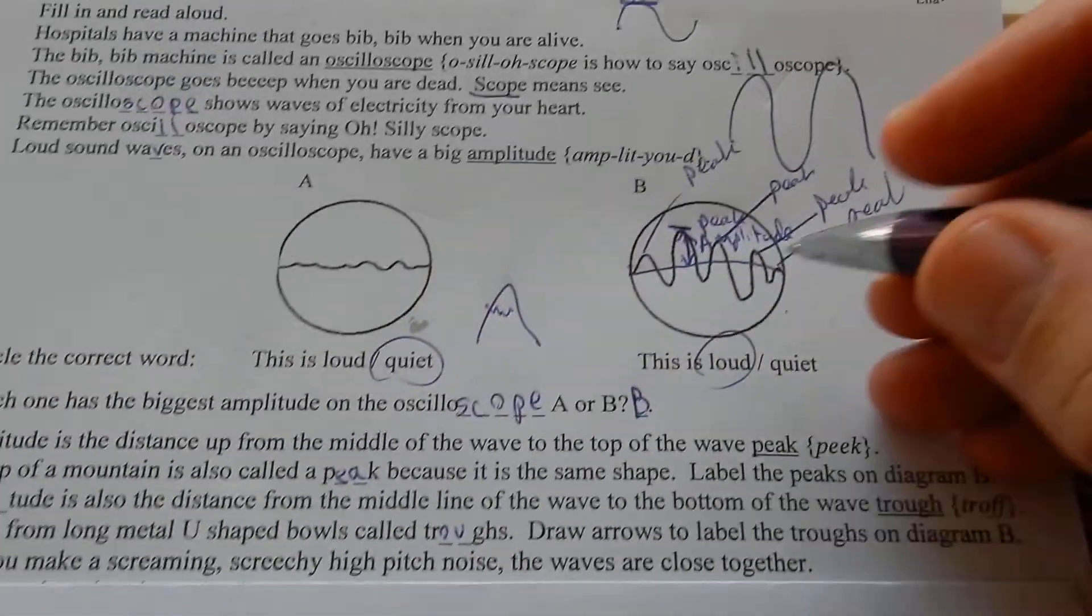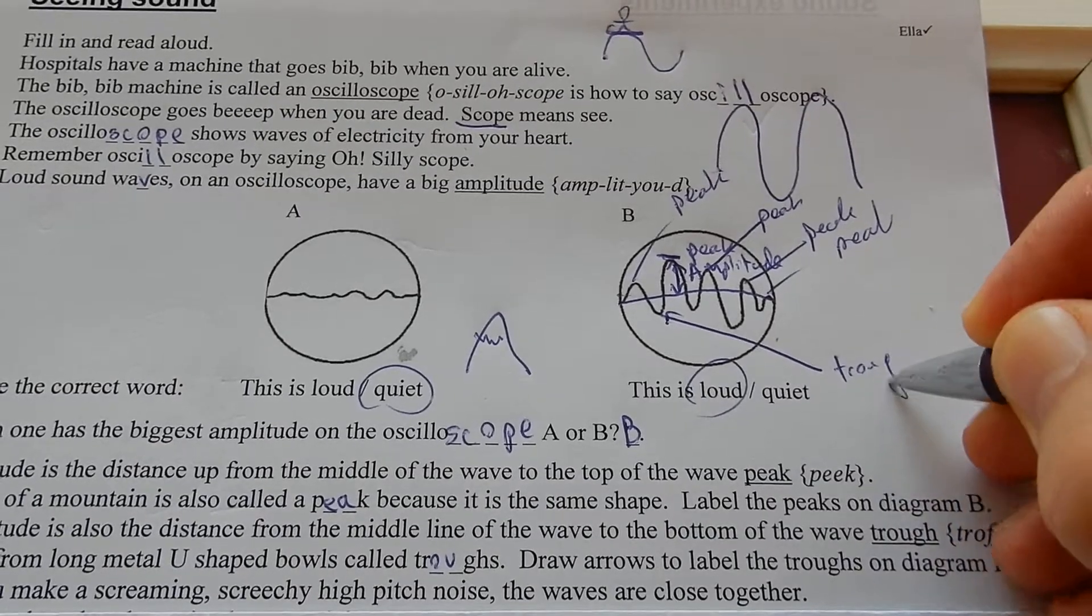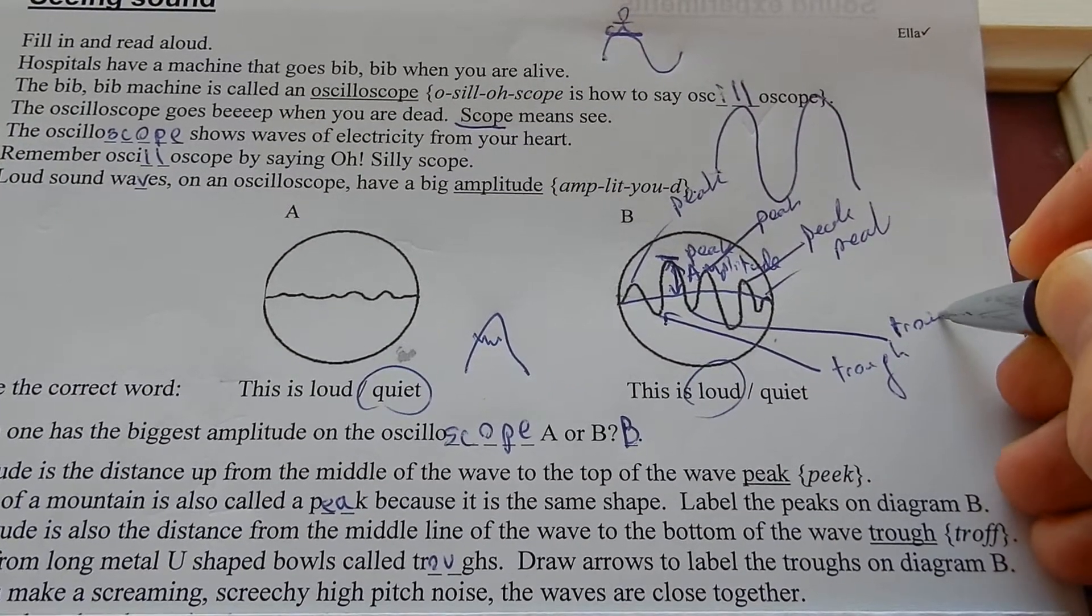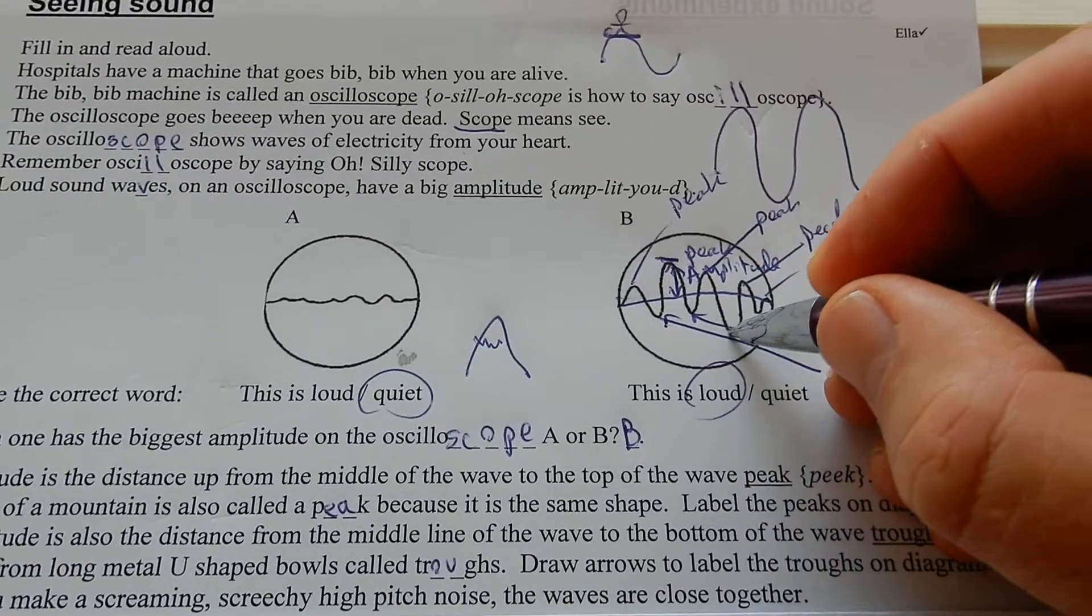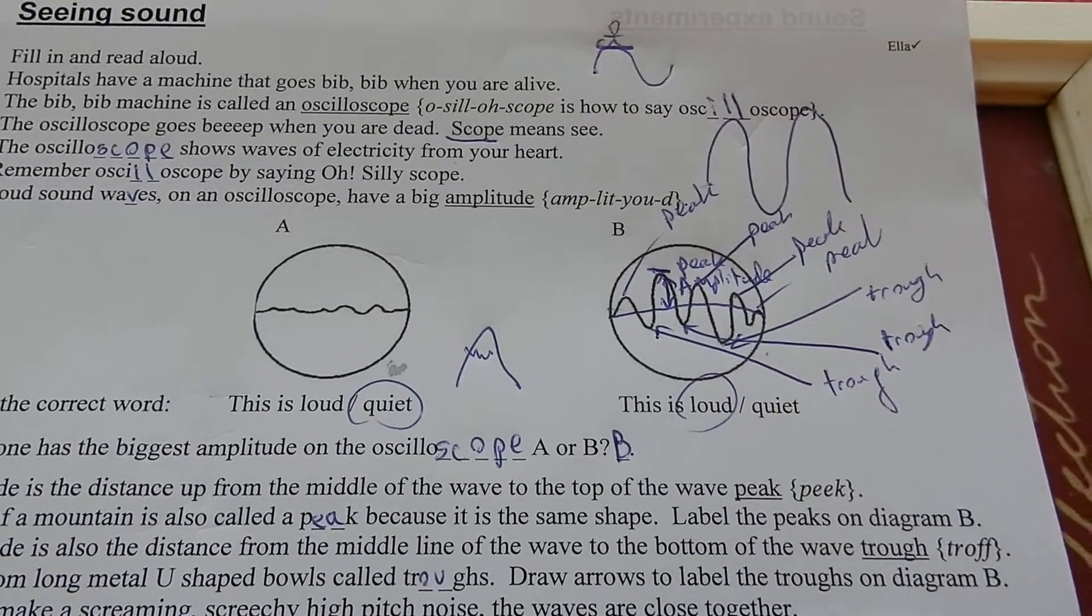Draw arrows to label the troughs on diagram B. Okay, here we go. Trough, trough, trough. That's enough, that's all I've got the space for.